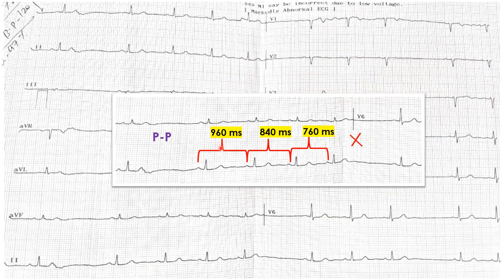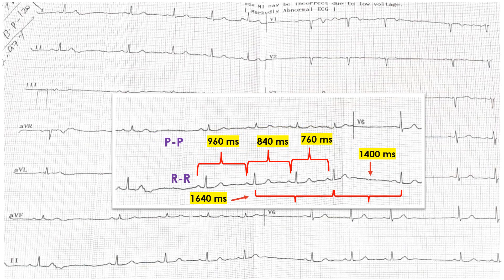This means the PP intervals are getting shorter. This is consistent with SA Wenckebach — which is opposite to AV Wenckebach seen on the ECG. In sinoatrial Wenckebach, one type of sinoatrial exit block, the PP interval gets progressively shorter, then there is a dropped beat followed by a pause, and then the P wave fires. The PP interval shortens in each successive beat until there is a dropped beat and the cycle resets.